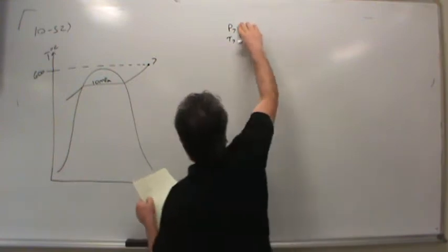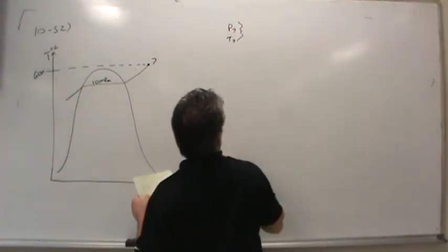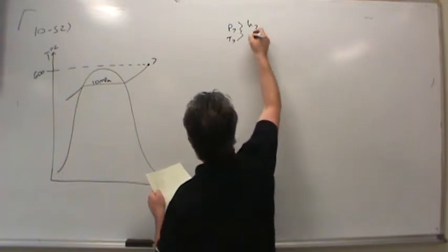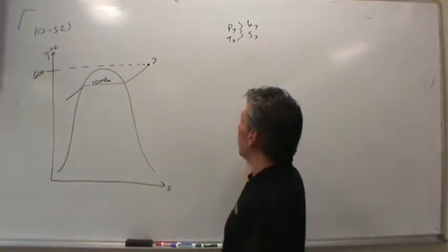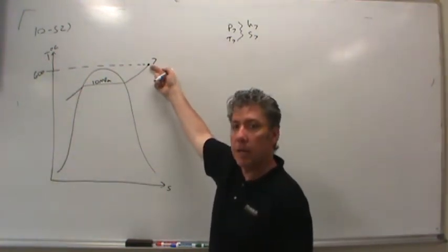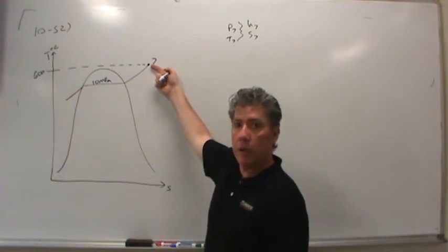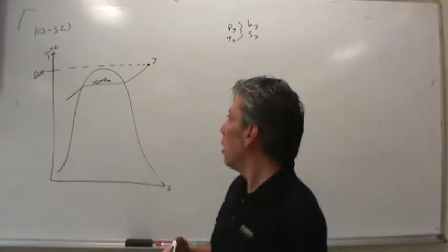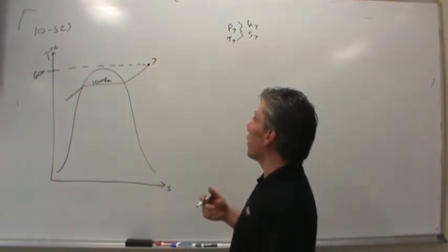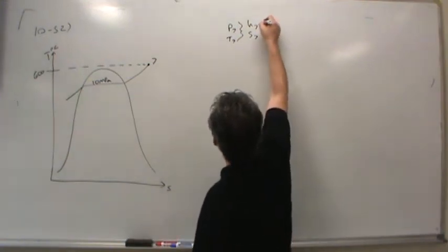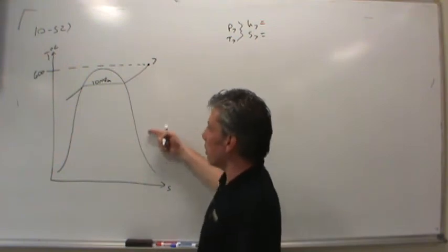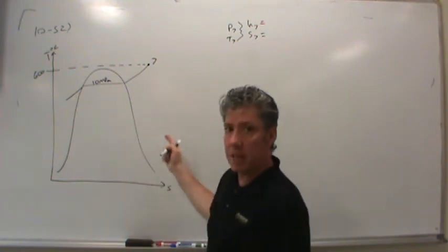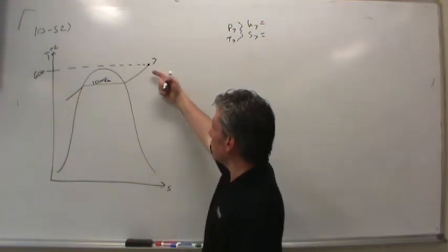Those two pieces of information together allow me to figure out things — for example, the enthalpy at state 7 and the entropy at state 7. I care about the enthalpy because it represents the amount of energy the steam has, and it will help me quantify how much energy the steam gives up as it moves through the turbine. The entropy will help me discover information about other states, such as the state coming out of the turbine at the end or as bleed steam is pulled off to go to the open feed water heaters.